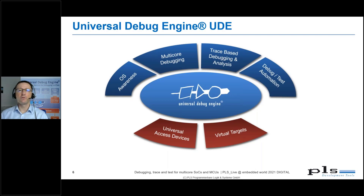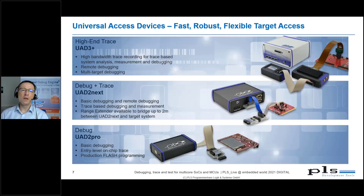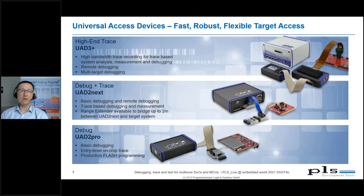Before I give you a brief introduction into some of the key features of UDE, let me give you an overview of the Universal Access Device family. The family consists of three devices — we call them Universal Access Devices, or UADs. The debug tool gets access to the particular target system using the UADs, whereas the UAD itself is completely target independent, so they do not have to be changed if another target should be debugged.